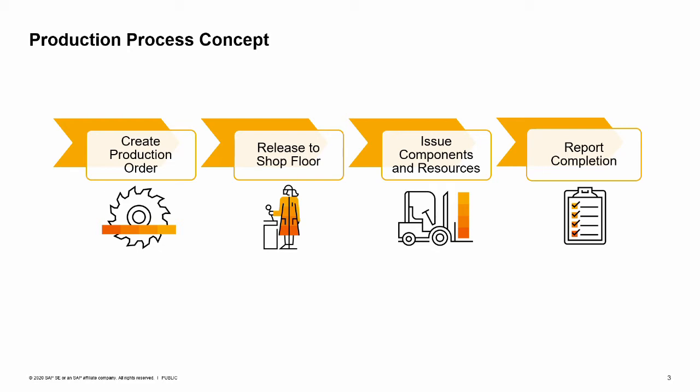When the production process is over, the production order is closed. This closure creates a journal entry for balancing inventory accounts at perpetual inventory-managed companies. We will have a closer look at the production order and the production process in the next slides.